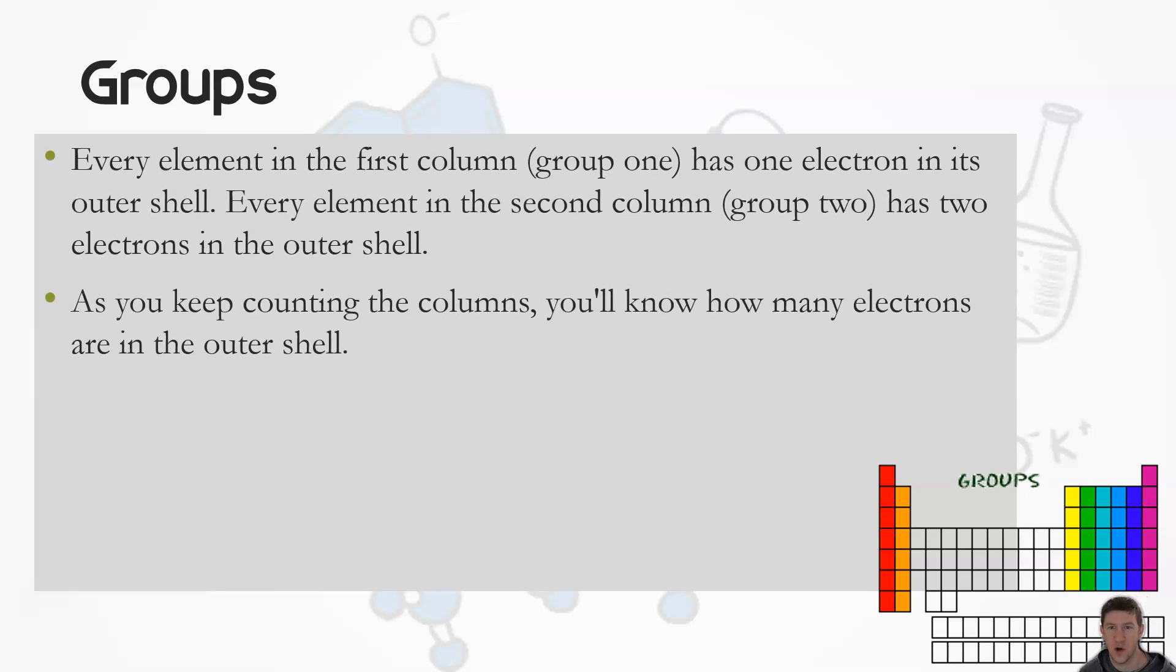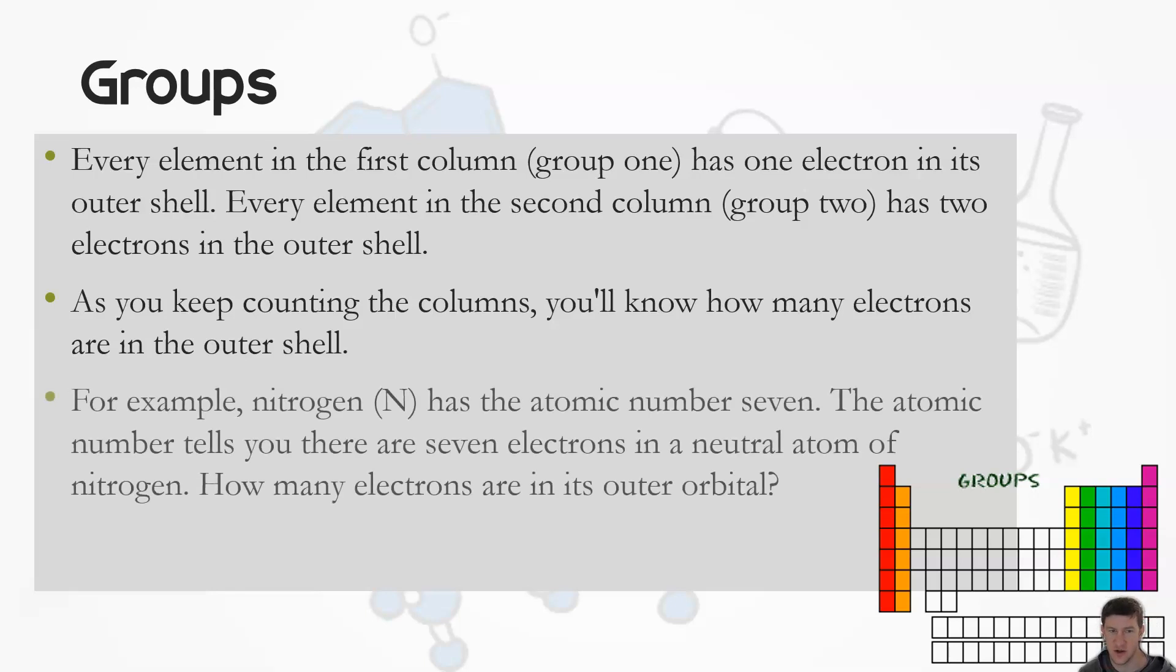Firstly, all of those group one has one electron in that shell, the second column has two, and so on and so forth. One thing you'll notice is depending on the periodic table, they're often numbered one, two, and then they jump to three. However, some versions they continue to count from three, four, five - they include all of these intermittent elements here.